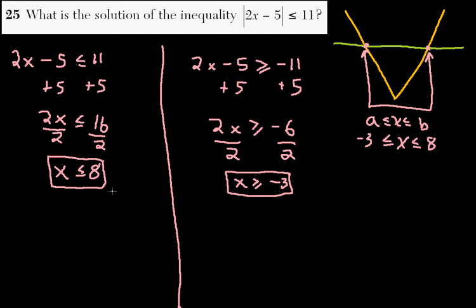Now putting these together on a number line, we have negative 3 over here. We have positive 8 over here. And anything in this interval...